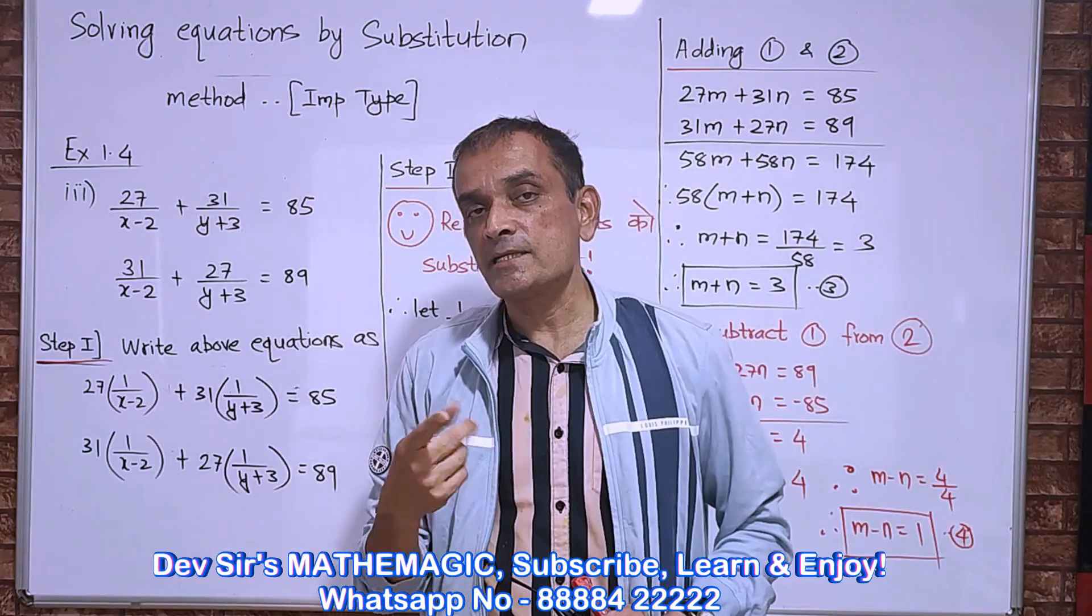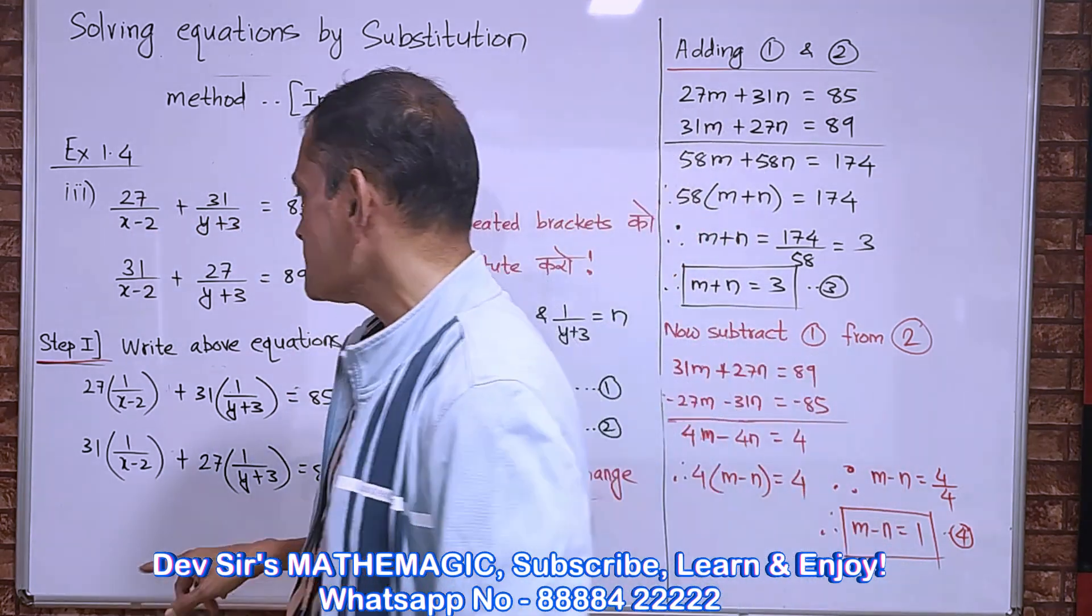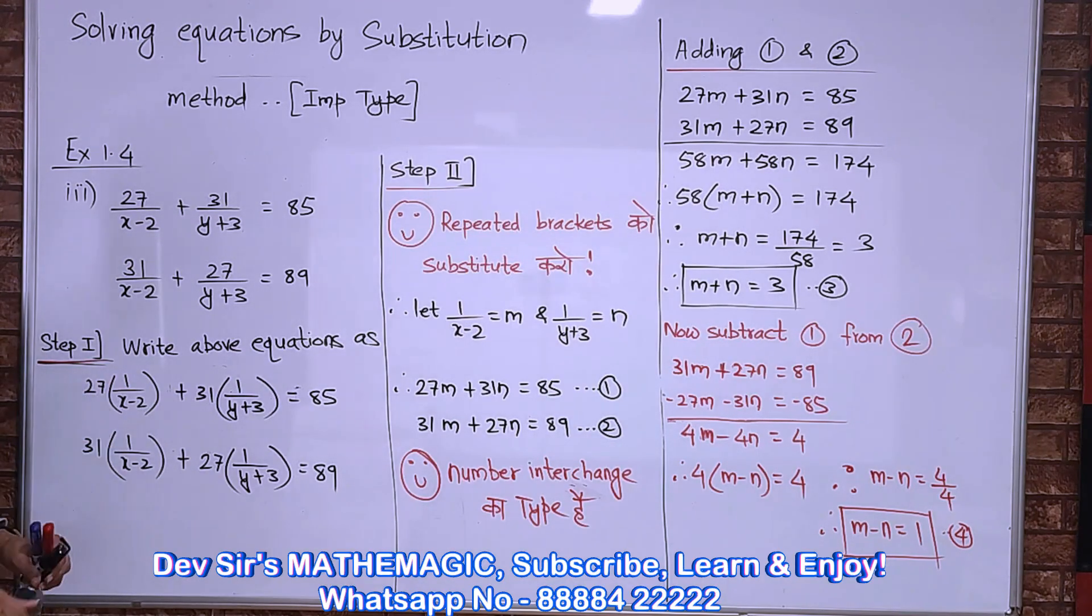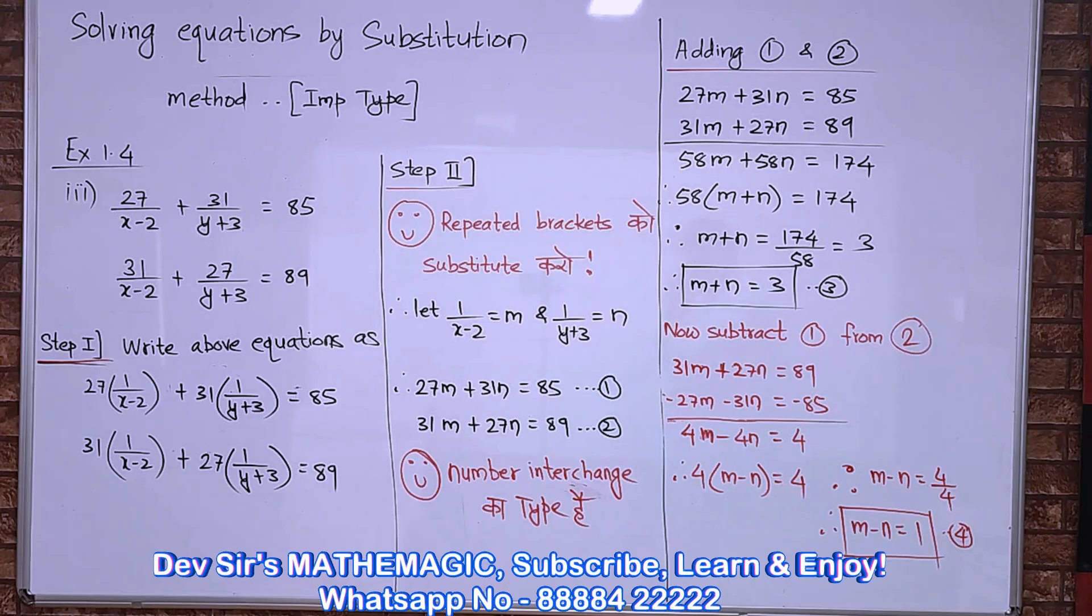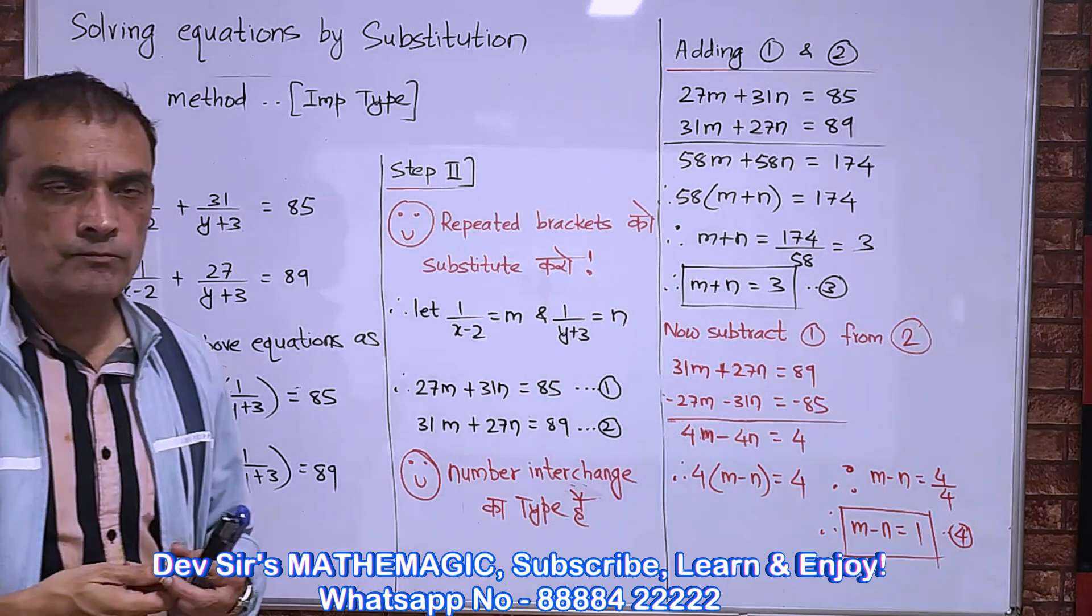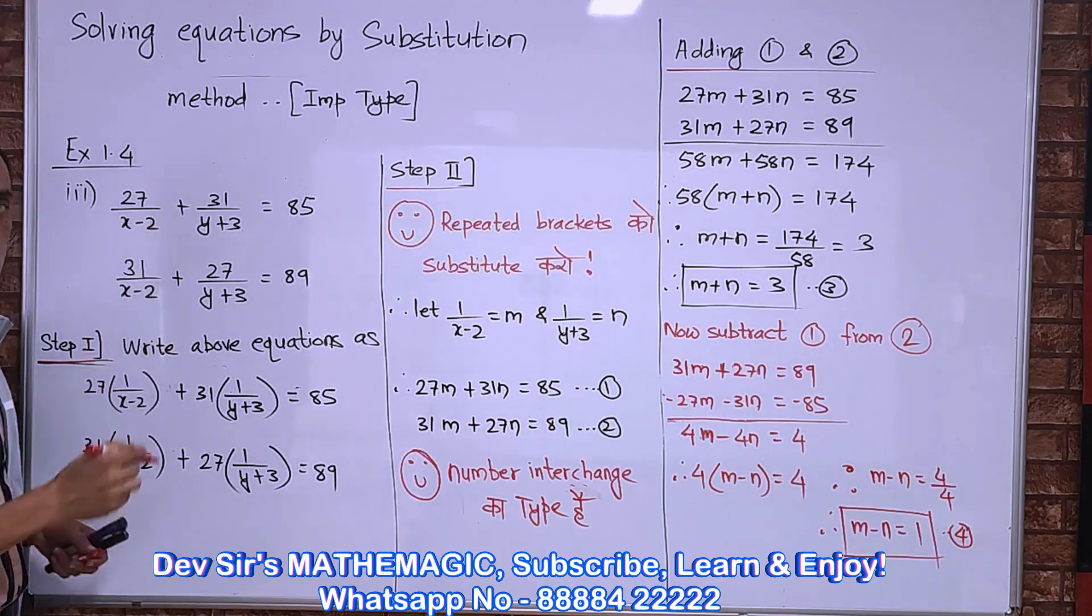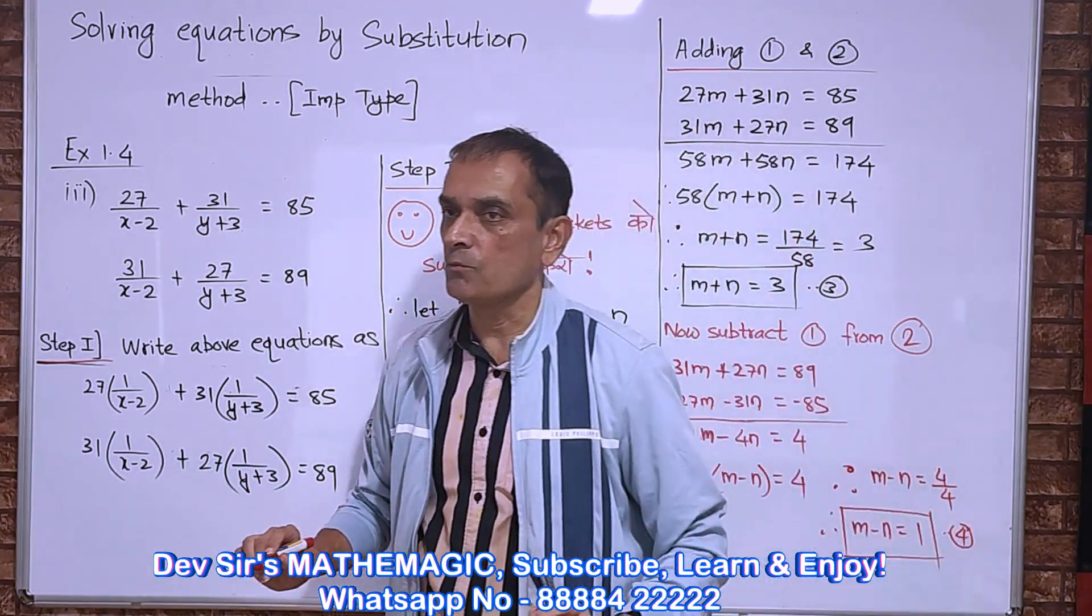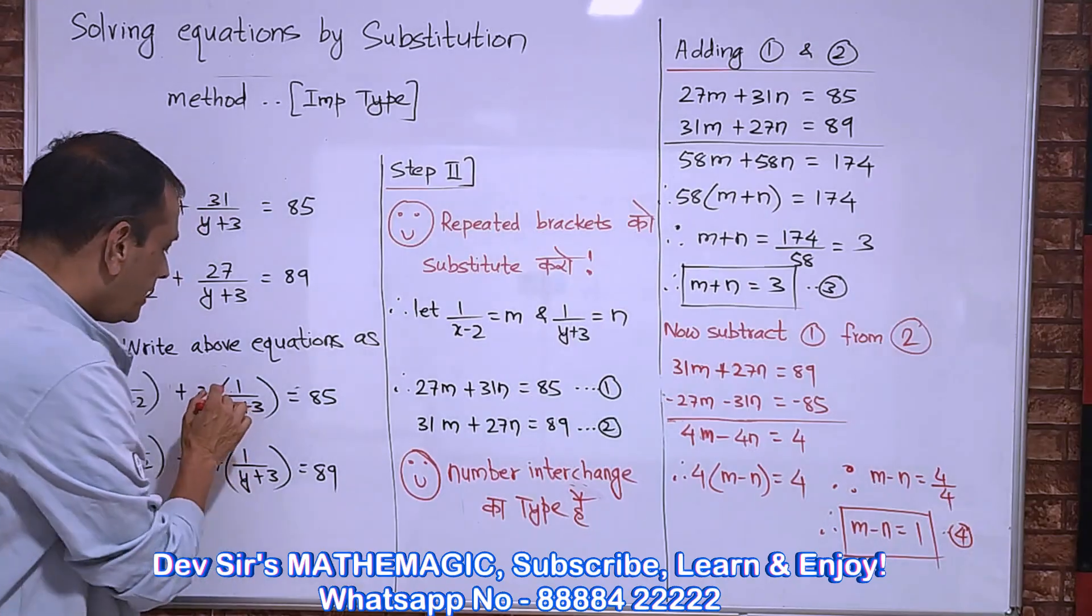So now how do we substitute it? Before that, the important step is 27 upon x minus 2, I am going to write the first equation as 27 into 1 upon x minus 2. Keep your notebooks ready. Now if we multiply 27 into 1 and denominator x minus 2, we are not changing the problem. Similarly, 31 upon y plus 3 can be written as 31 into 1 upon y plus 3.